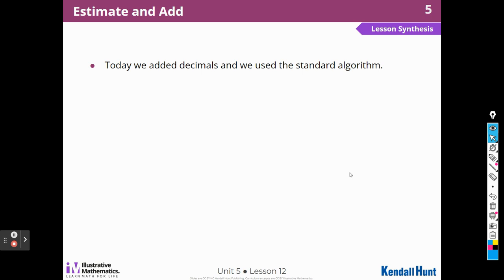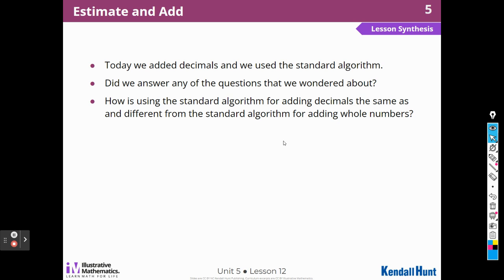Today, we added decimals, and we used the standard algorithm. How is using the standard algorithm for adding decimals the same and different from the standard algorithm for using whole numbers? Well, they're all organized vertically on top of each other with the same place value above and below the same place value. We have to make sure we add those digits with the same place value. I need to keep track of where the decimal is in both numbers. So, I make sure that that's on top of each other.